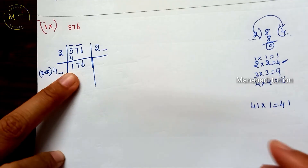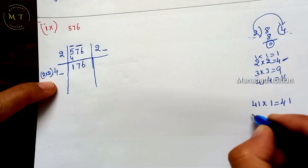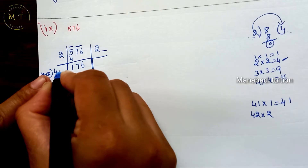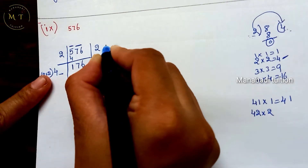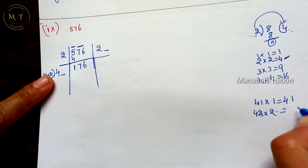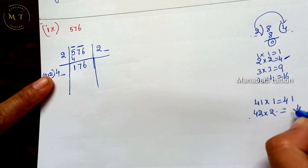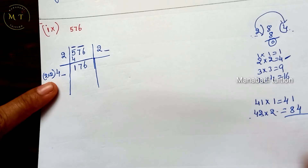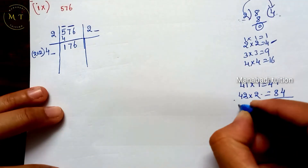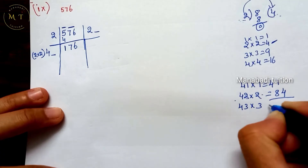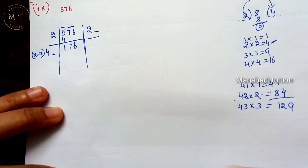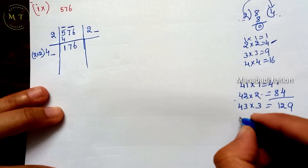There is a difference. Suppose you have 2. Here is 42. 2×2 is 4, 4×2 is 8. There is 84. There is a difference — 4. Next: 43×3. 3×3 is 9, 4×3 is 12. That gives 129. Then 44×4.